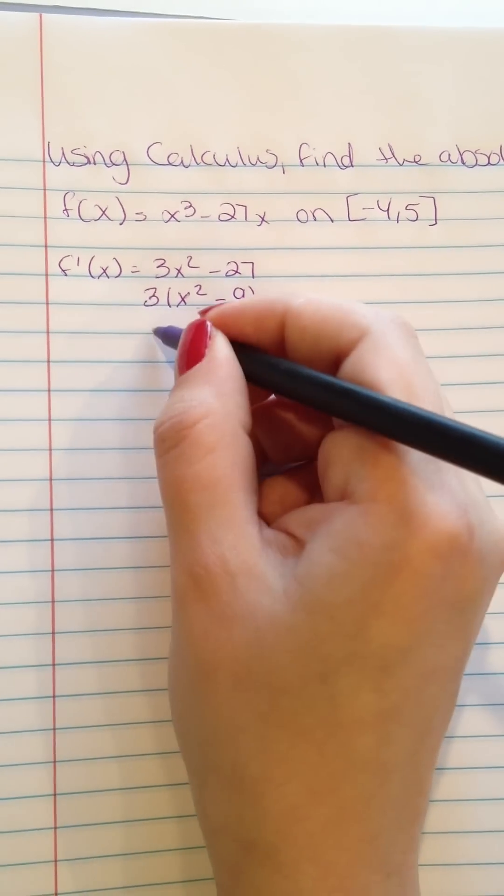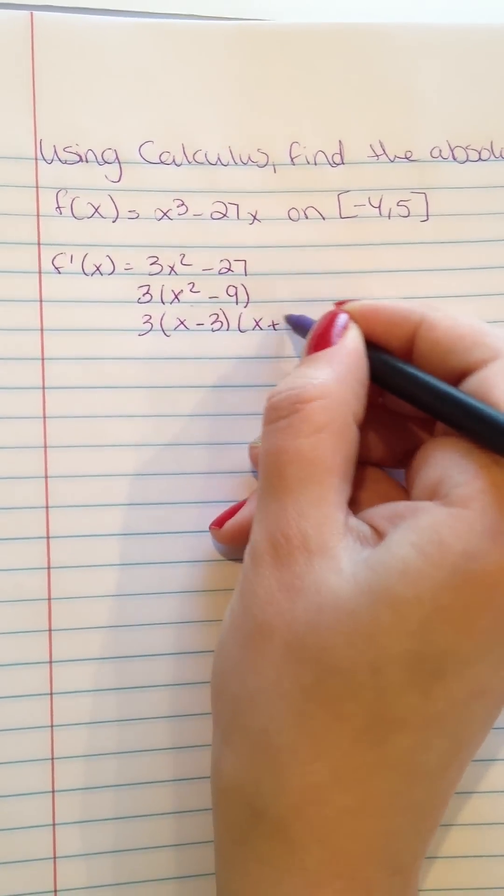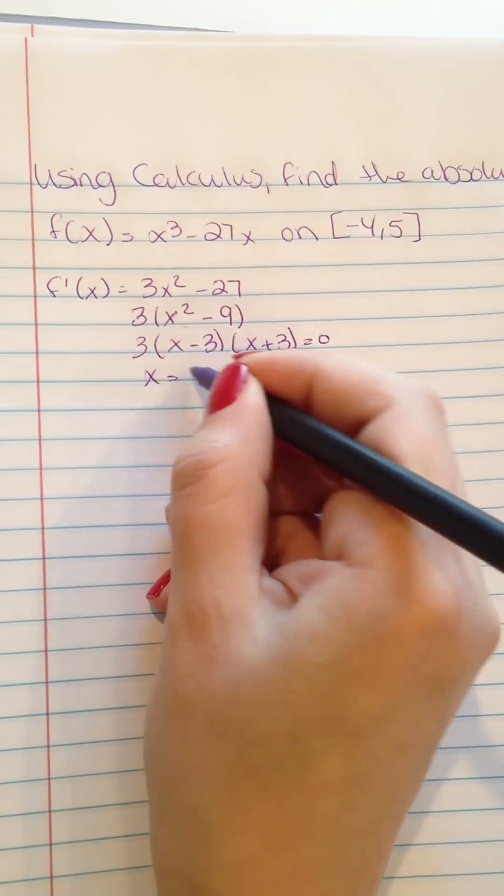And then we have to open it up, 3(x - 3)(x + 3), and then set it equal to 0. x equals 3, x equals -3.